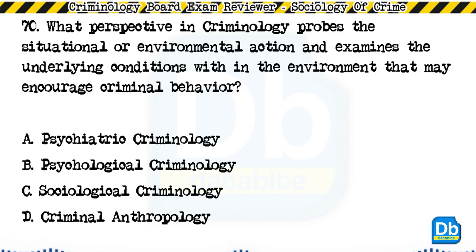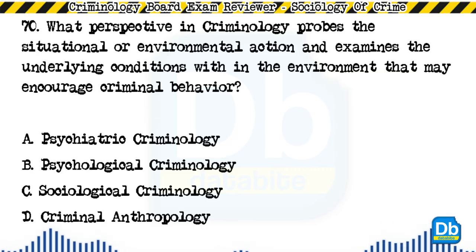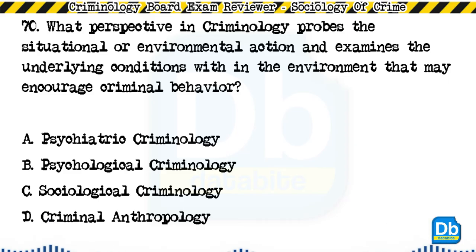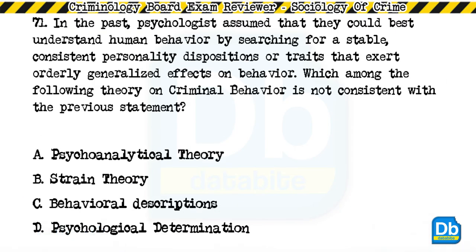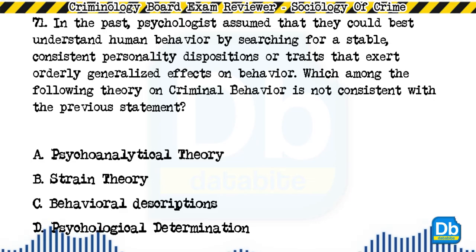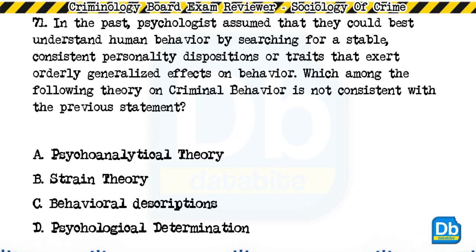Question 70: What perspective in criminology probes the situational or environmental action and examines the underlying conditions within the environment that may encourage criminal behavior? a) psychiatric criminology, b) psychological criminology, c) sociological criminology, d) criminal anthropology. The answer is C, sociological criminology. Question 71: Psychologists assumed they could best understand human behavior by searching for stable, consistent personality dispositions or traits. Which of the following theories on criminal behavior is NOT consistent with that statement? a) psychoanalytical theory, b) strain theory, c) behavioral descriptions, d) psychological determination. The answer is B, strain theory.